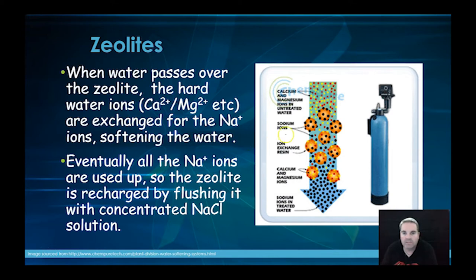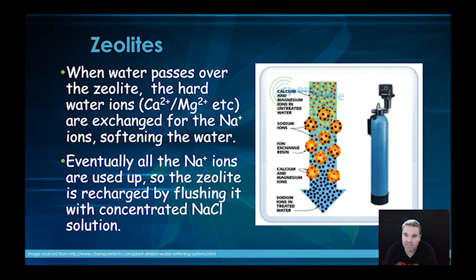When water passes through the zeolite we've got calcium and magnesium ions in the water and the zeolites — the yellow balls — with sodium ions on the surface. Because calcium and magnesium have a higher charge density, they get attracted to the silicates and displace the sodium ions from the surface, so we do an exchange.